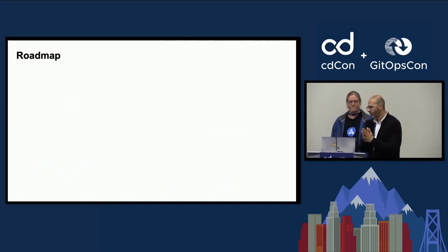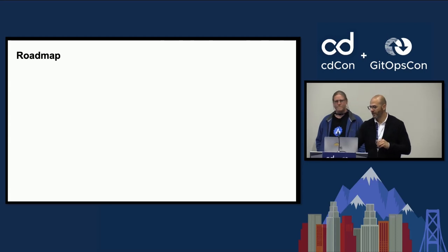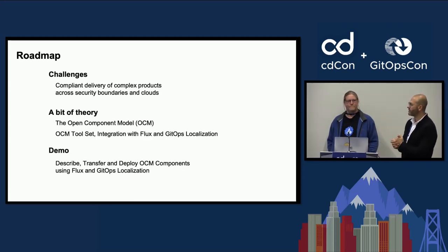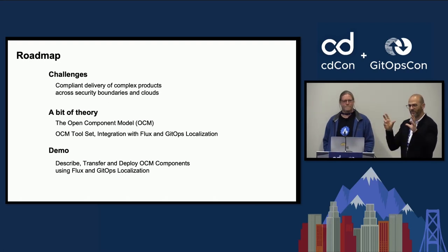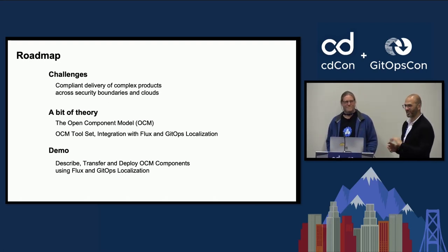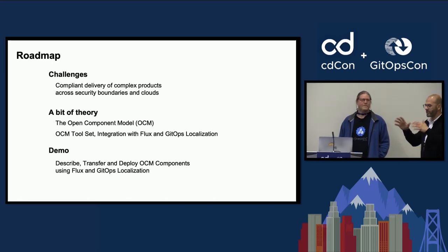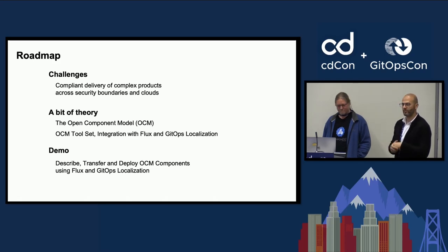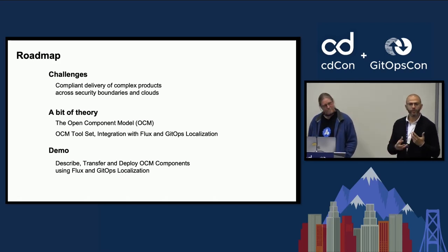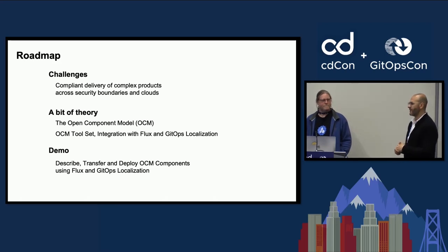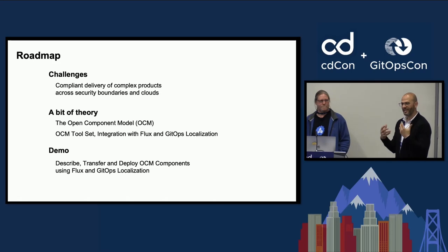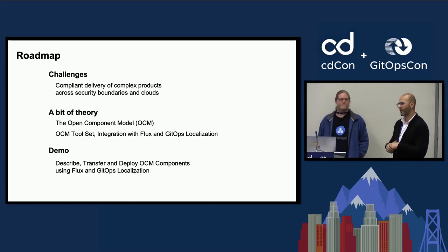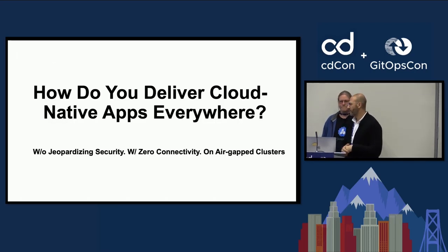Let me go quickly through the roadmap of this presentation. It consists of three main parts. We're going to make it simple since it's the end of the day and you're probably working at 25% capacity. We're going to start with the challenges — why OCM, why did this start, and why SAP and WeWorks are working together. Then we'll talk about the basic concepts and building blocks of OCM, and then Dan is going to do the real work by showing us an end-to-end demo of how OCM plus Flux can work together.